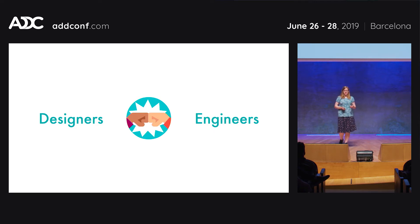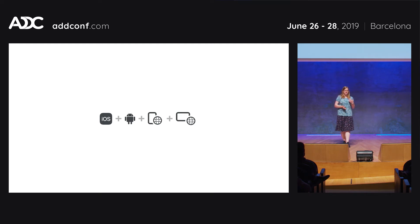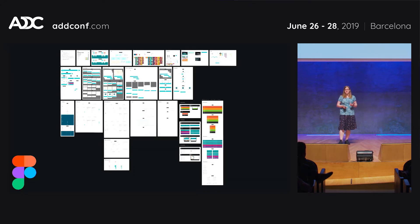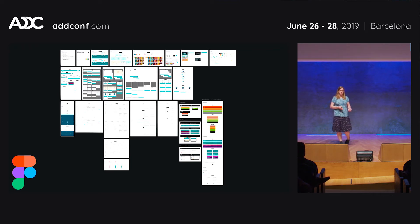At Deliveroo, the initial drive came from our designers. They had to build four versions of every screen: iOS, Android, mobile web, and desktop web. This was very time-consuming. While we did have some shared components, there weren't a lot of rules around them, so you still ended up with a lot of custom components and inconsistencies. Simplifying this process made a lot of sense, and so a design system team was created.